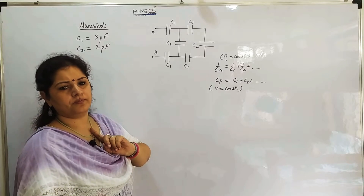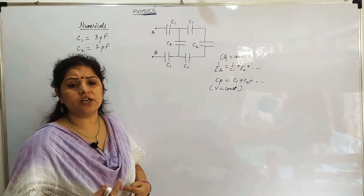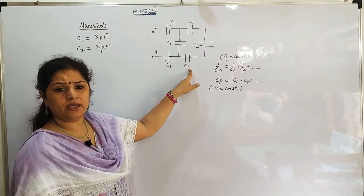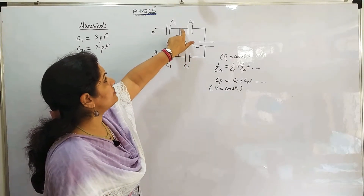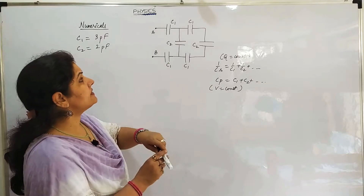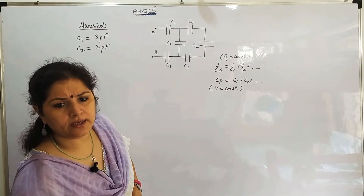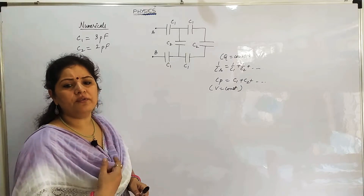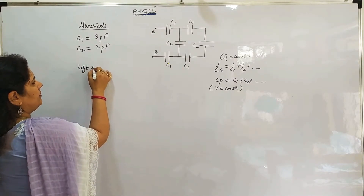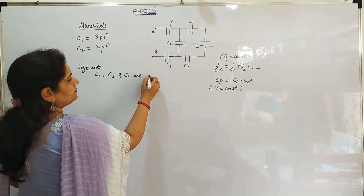How are we going to solve? We will not touch those capacitors which are directly connected to the battery. We will start solving from this end. C1, C2, and C1 will be in series. Whatever charge will flow from here, the same charge will enter here. So, we will find C1, C2, and C1 in series. We will write C1 on the left side, because all are either C1 or C2. On the left side, C1, C2, and C1 are in series.